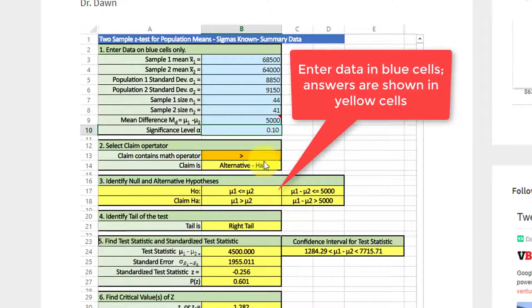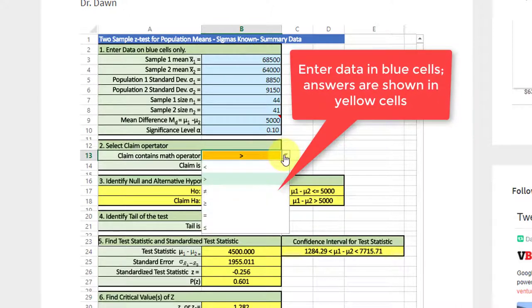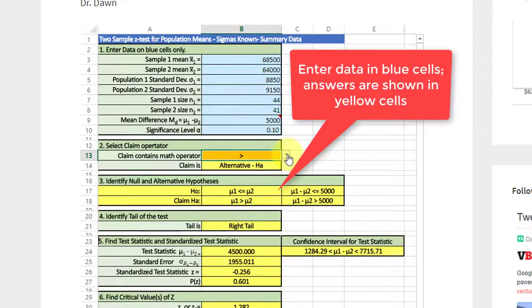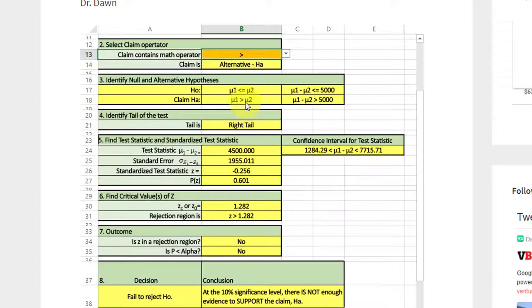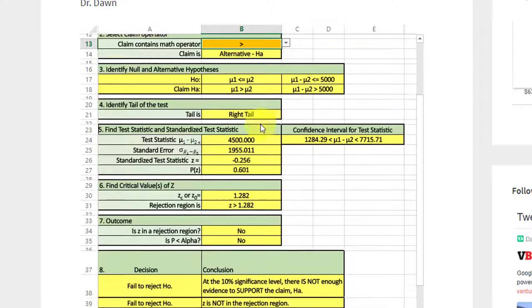The next thing you do is select the claim operator. As I mentioned, the claim operator contains a greater than. If it wasn't greater than, you just select on the drop down. That tells us that the alternative is the claim. This gives us the statement mu 1 minus mu 2 is less than or equal, greater than, which is what the problem asks for. It tells us that the test is a right tail because the alternative claim contains the greater than operator, which points to the right.